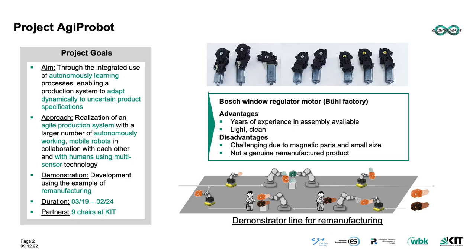The AgiProBot project aims for auto-detection, tracking and disassembly of end-of-life products. In our current experimental setting, we work on small electric motors used in vehicle manufacturing. A universal method needs to be developed to deal with various types of motors, including ones with unseen specifications. However, we are only provided with a handful of motors with only a few different product specifications, and the variance of data is not sufficient for training deep learning-based methods.